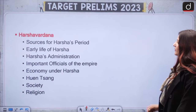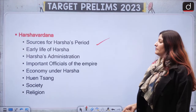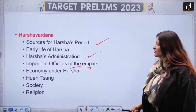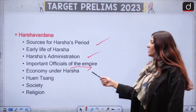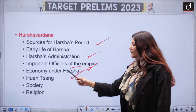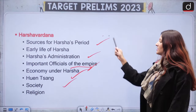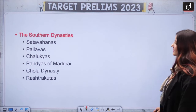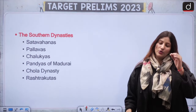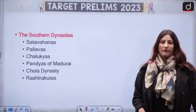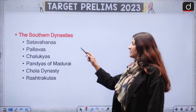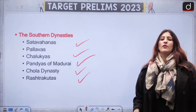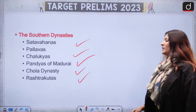Moving ahead to Harshavardhana — what are the sources for Harsha's period, his early life, Harsha's administration, important officials of the empire, economy under Harsha, Xuanzang, society, and religion — important for both prelims and mains. Southern dynasties are also important — don't forget about them. Very important rulers: Satvahanas, Pallavas, Chalukyas, Pandyas, Cholas, and Rashtrakutas. Very important pillars were also made with respect to the southern dynasties.